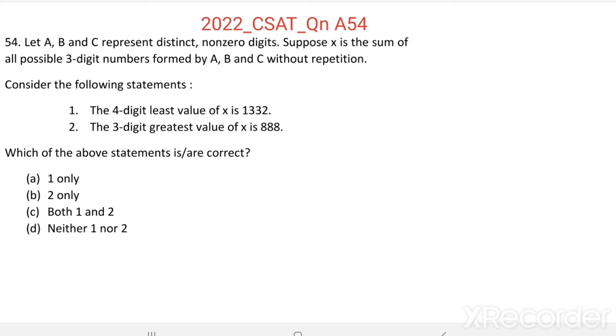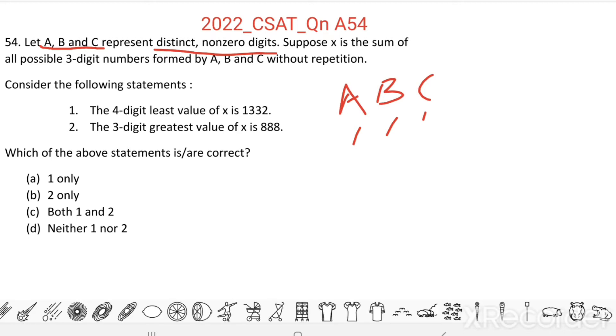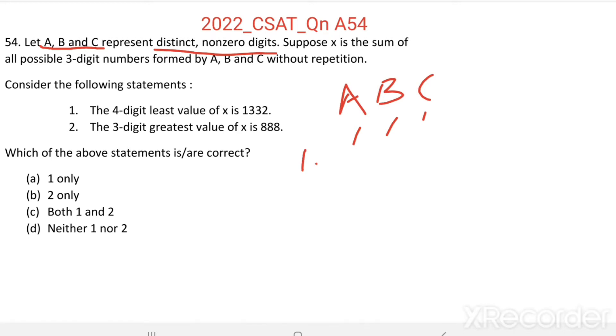So, there is a 3-digit number which is formed by A, B, C where A, B and C are distinct non-zero digits. So, non-zero digits are 1, 2, 3, 4, 5, 6, 7, 8, 9.